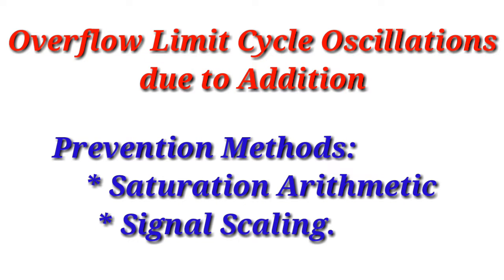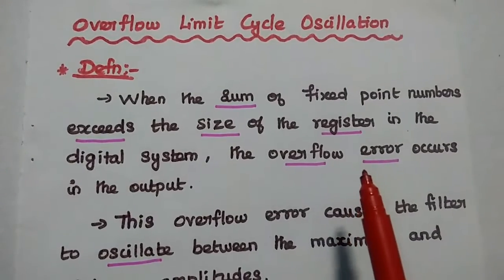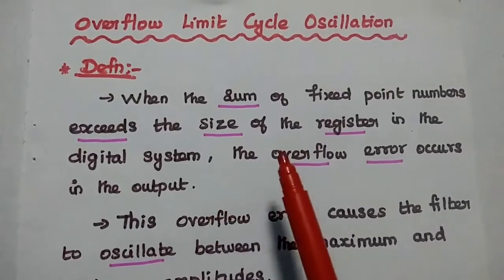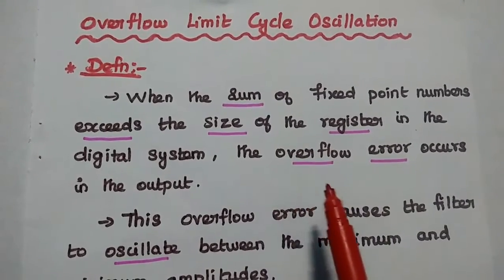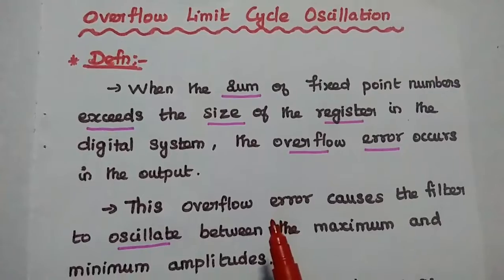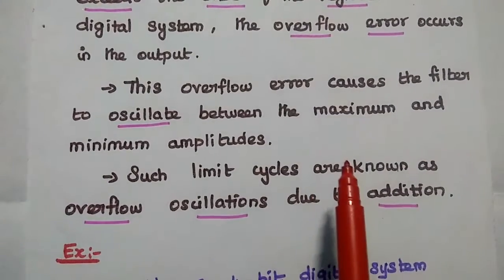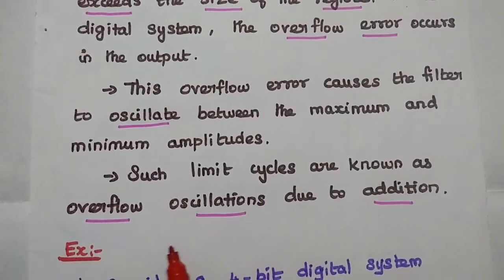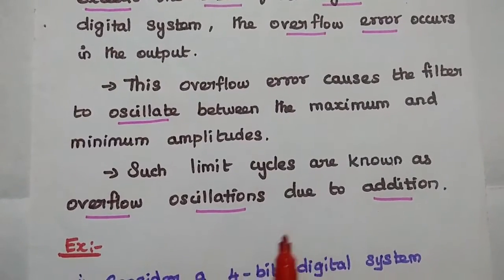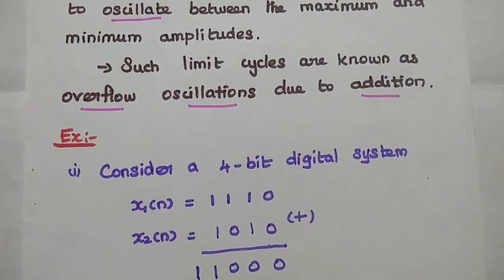Now we are going to discuss overflow limit cycle oscillations due to the addition process. Overflow limit cycle oscillation occurs due to the addition process in digital systems. When the sum of fixed point numbers exceeds the size of the register used in the digital system, an overflow error occurs in the output. This overflow error causes the filter to oscillate between the maximum and minimum amplitudes of the system. Such limit cycles are known as overflow oscillations due to the addition process.